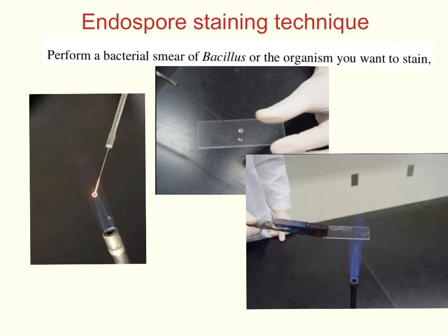The endospore staining technique is a technique for penetrating and staining the endospore. Because the endospore is so tough and dense, this requires special steps. A good stain to use for spore staining is Malachite Green. First, we want to perform a bacteria smear of our Bacillus or whatever organism we want to stain.